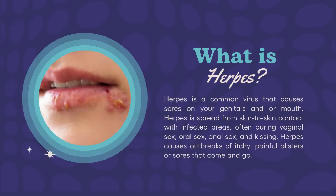Herpes is a common virus that causes sores on your genitals and/or mouth. It is spread from skin-to-skin contact with infected areas, often during vaginal sex, oral sex, anal sex, and kissing. Herpes causes outbreaks of itchy, painful blisters or sores that come and go.